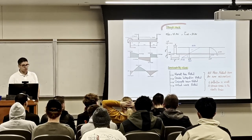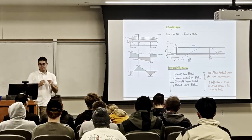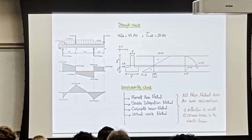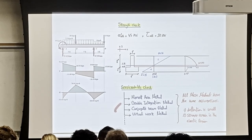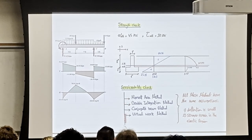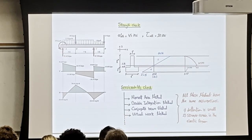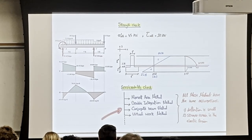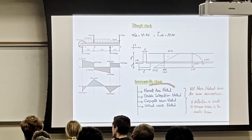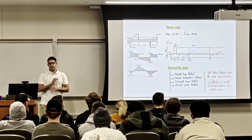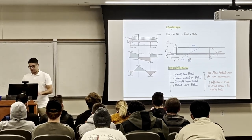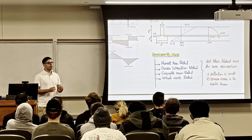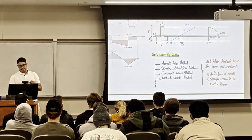Once you've made sure the strength is safe, there is another thing you need to check, which we call a serviceability check — and this is basically the deflection. There are many ways to calculate deflection: the moment-area method, double integration, conjugate beam, virtual work, and more. Each method takes two to three lectures. In this class we're not going to do any of them — that's for advanced classes. All these methods are based on the assumption that deflection is small and stresses remain in the elastic region.